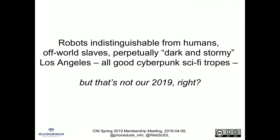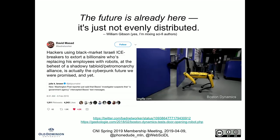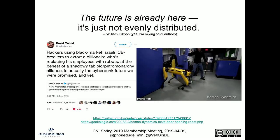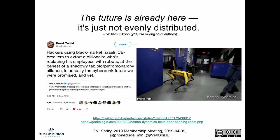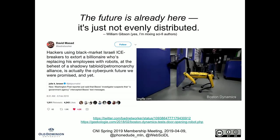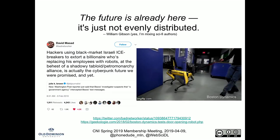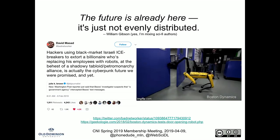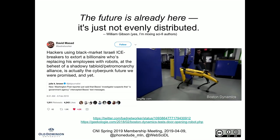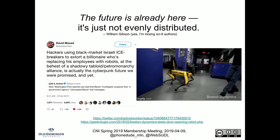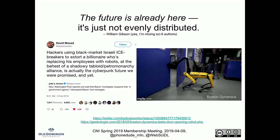We've got robots indistinguishable from humans, off-world slaves, a perpetually dark and stormy Los Angeles — the essence of good science fiction, good cyberpunk. But that's not our 2019, right? Well, the future is already here. The cyberpunk future is already here. On the left-hand side you see a description of the Jeff Bezos situation, and then the equally fascinating and horrifying demos from Boston Dynamics. It is clear the cyberpunk future is already here.